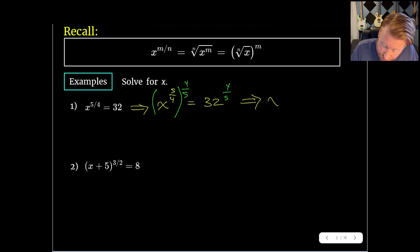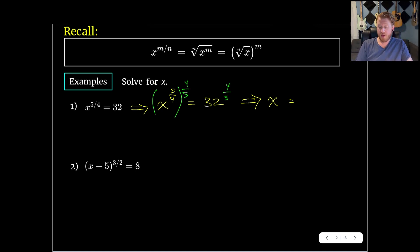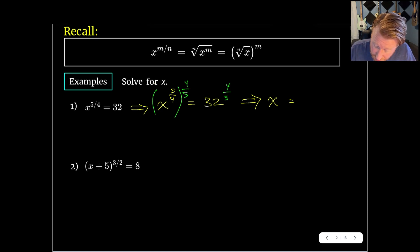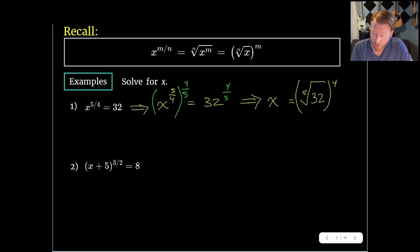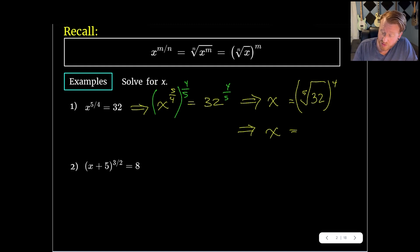Now we've got x to the first equals 32 to the 4 fifths. Let me rewrite 32 to the 4 fifths in its radical form. I'm going to write this as the 5th root of 32 with the 4 on the outside, because I can take the 5th root of 32 easily in my head and then raise it to the 4th power. So x equals the 5th root of 32, which is 2, raised to the 4th power, which gives us 16.